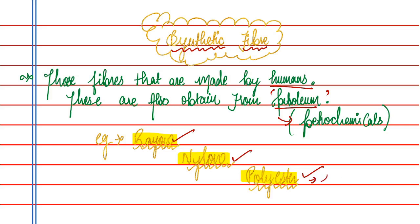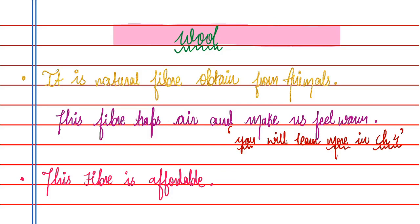Why do we call it polyester? The word 'polyester' contains 'poly' like polythene. Rayon and nylon are shiny, but polyester is not really shiny. You should know that in India the most commonly used artificial and synthetic fibers are rayon, nylon, and polyester. There are many other fibers but these are the most prominent ones.